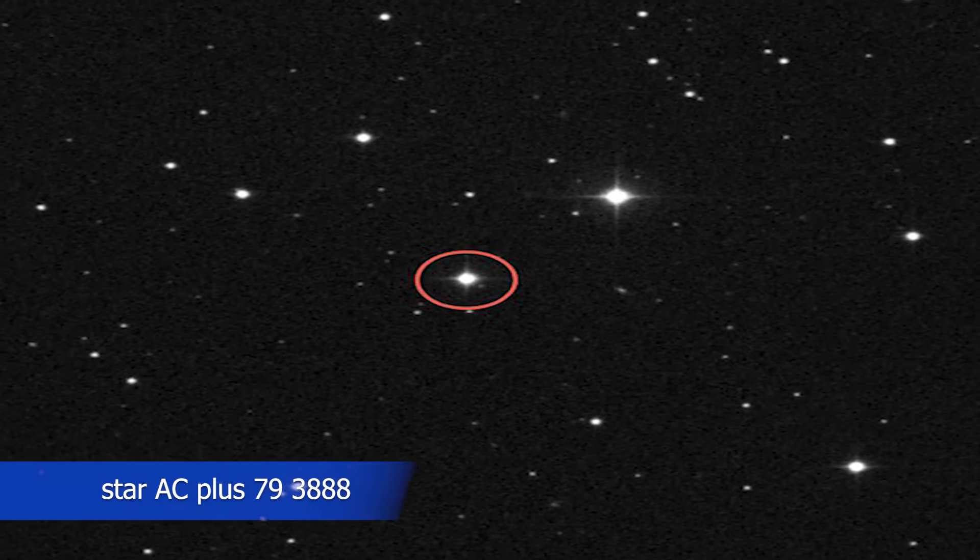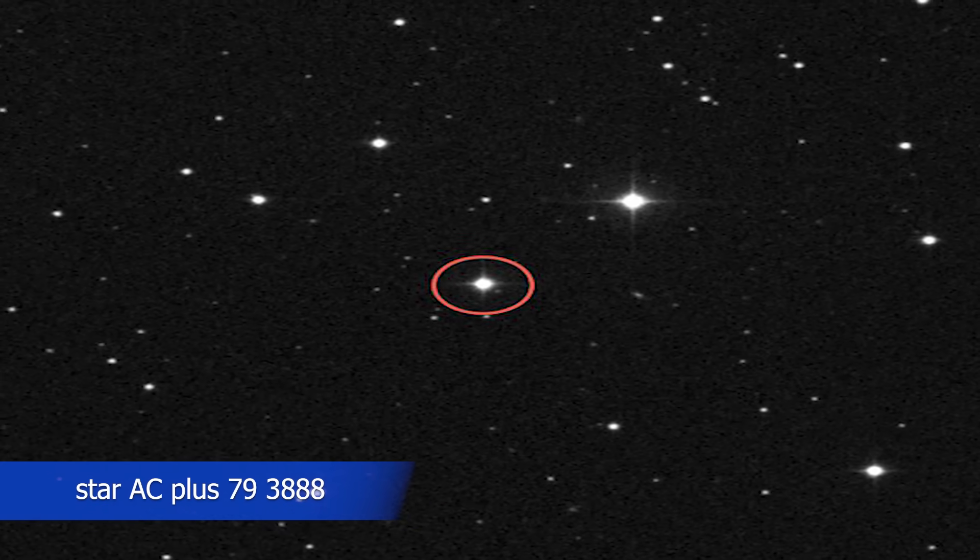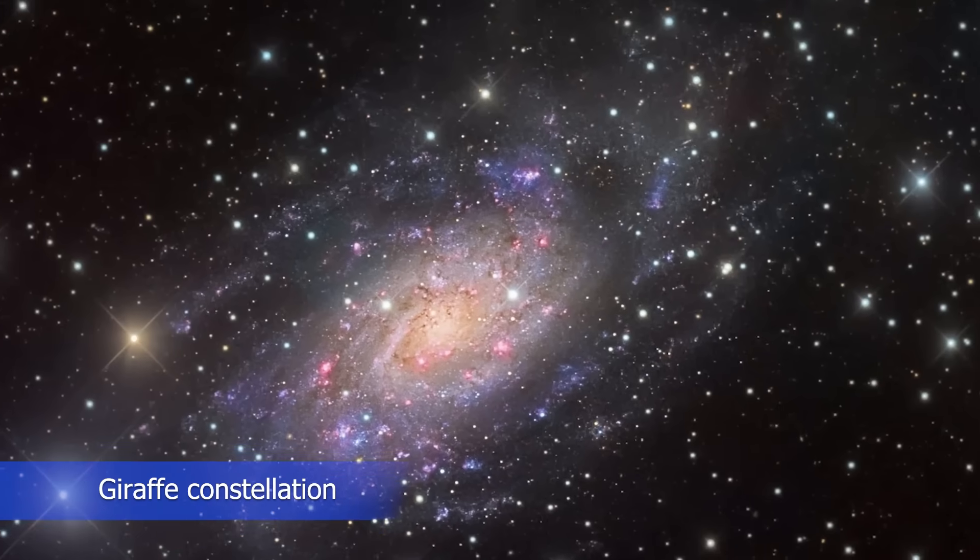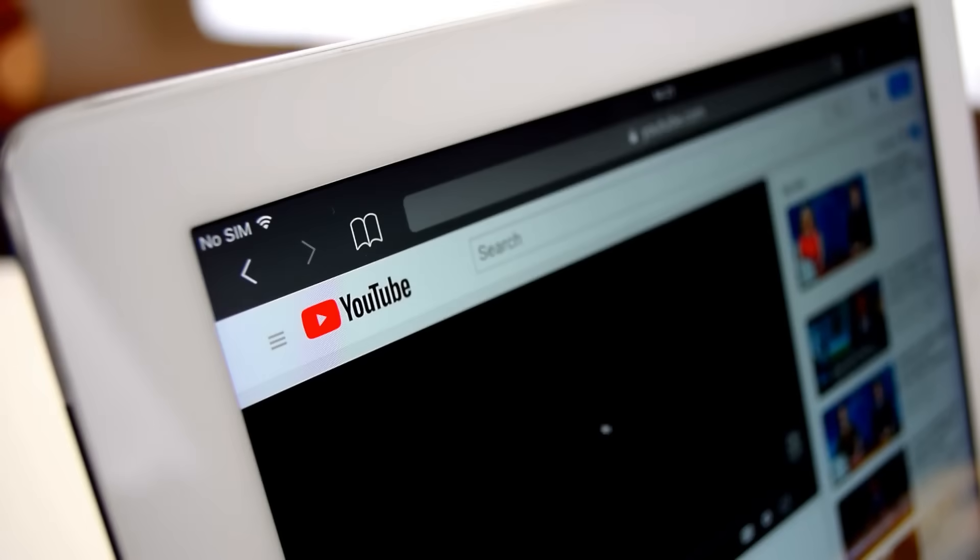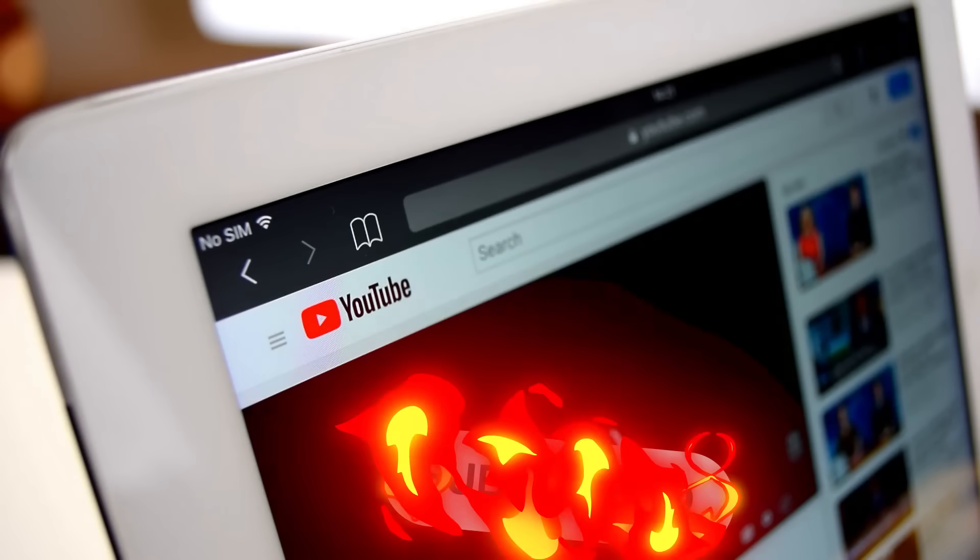And after 1.6 light years, Voyager 1 will arrive to the star AC plus 79 3888 in the giraffe constellation in almost 40,000 years. The best videos are still to come so hit the subscribe button now.